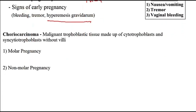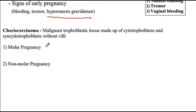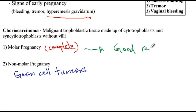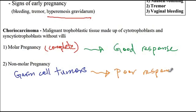Choriocarcinoma, the risk of which is increased with complete molar pregnancy, is a malignant trophoblastic tissue made of cytotrophoblast as well as syncytotrophoblast. In addition to molar pregnancy, there are other forms of choriocarcinoma that can develop from germ cell tumors. A critical difference between these two forms is that the one arising from molar pregnancy has a good response to chemotherapy, while the one arising from germ cell tumors has a poor response to chemotherapy.